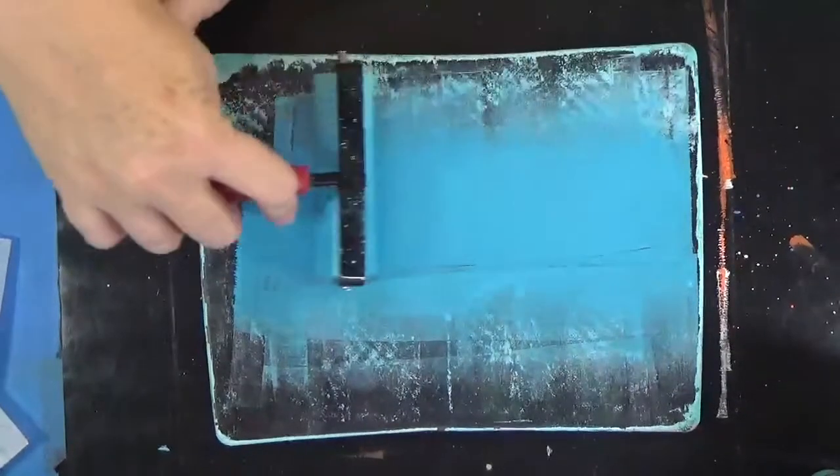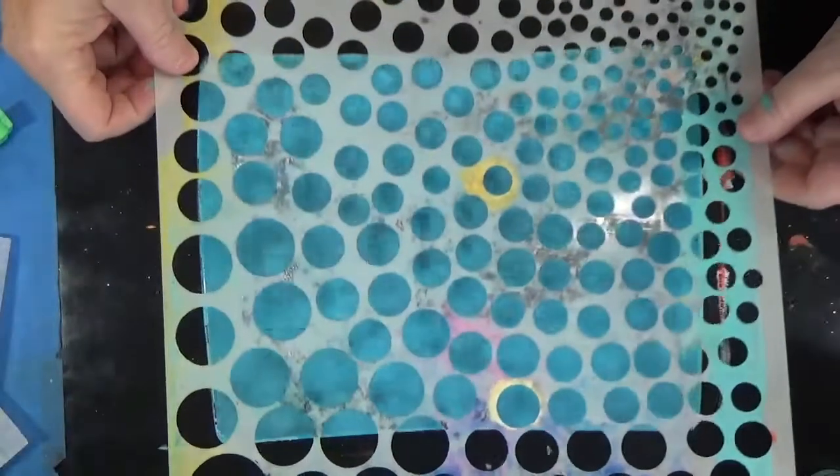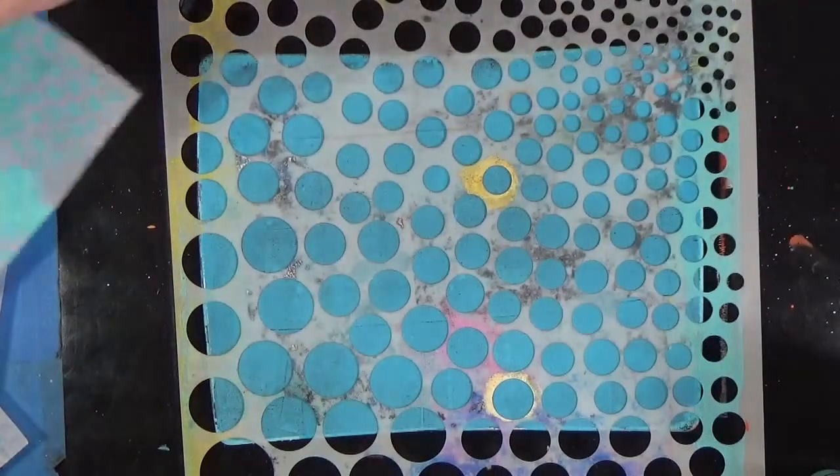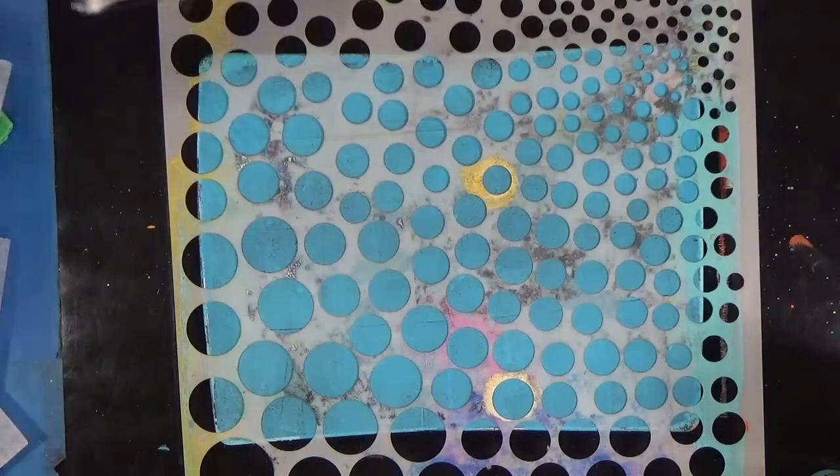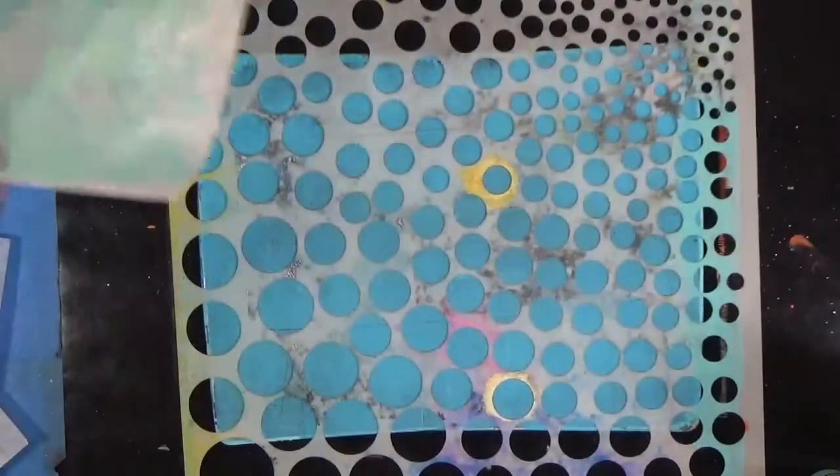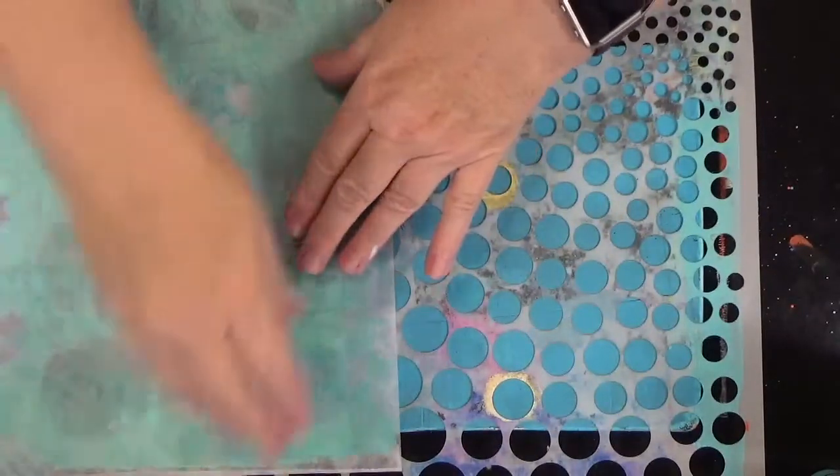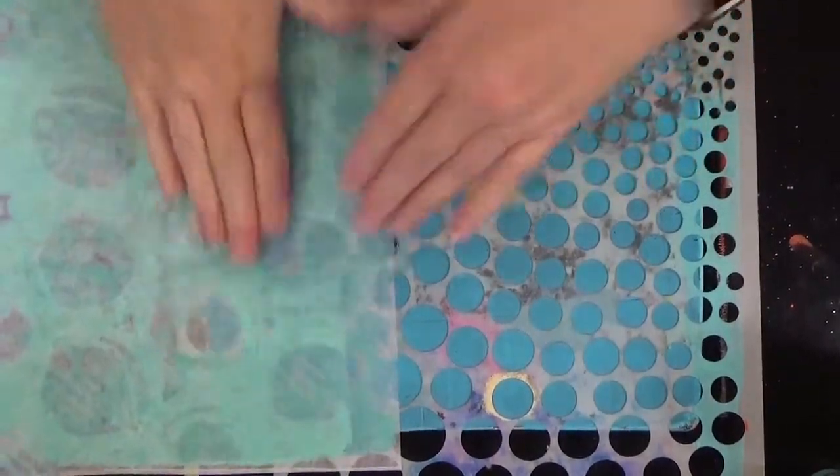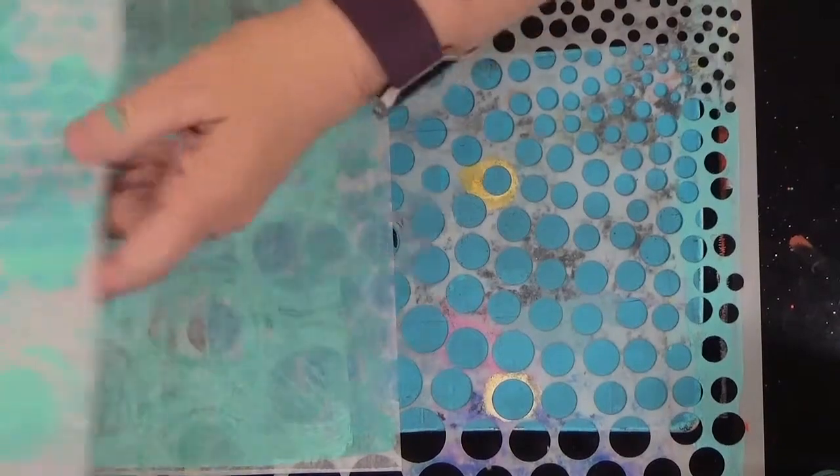Adding another paint color, which I believe is ocean blue, using a circle stencil. I believe this is a Crafters Workshop stencil. Adding just another layer to kind of develop that interest and all the different value that you might want to see.